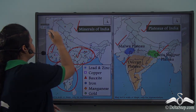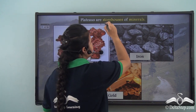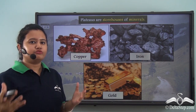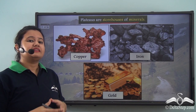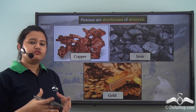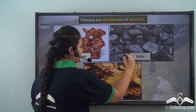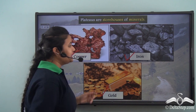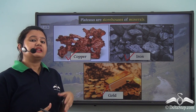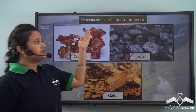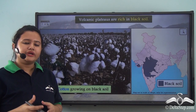Plateaus are storehouses of different varieties of minerals. Some minerals widely available on the Earth's surface include copper, iron, and gold. These minerals have high economic value and are mostly found in plateau regions.